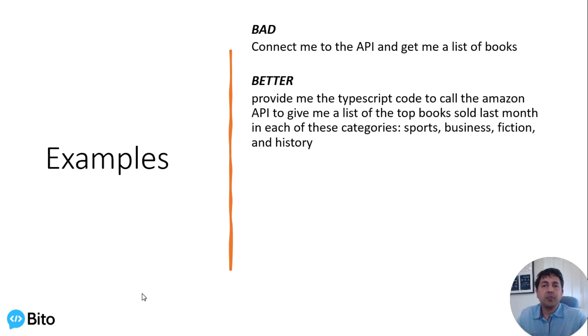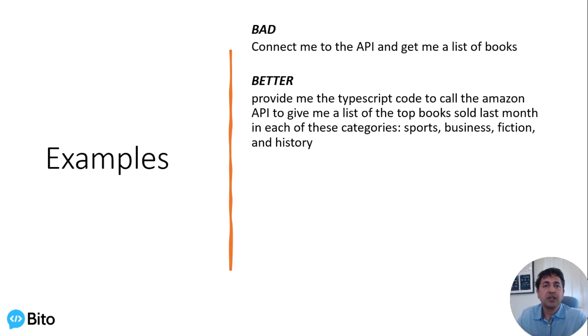Here's a slightly better prompt: 'Provide me the TypeScript code to call the Amazon API to give me a list of the top books sold last month in each of these categories: Sports, Business, Fiction, and History.'